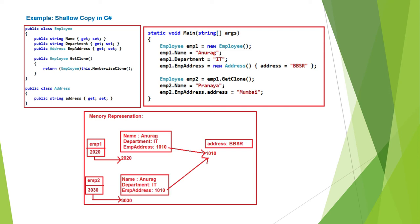When the first four statements are executed, two objects are created in the heap memory: one for Employee and another for Address. Name and Department are value types, so they directly store values like 'Anurag' and 'IT'. EmployeeAddress is a reference type, so instead of storing the value directly, it stores the base address of the Address object — for example, 1010. Employee1 is a reference variable in stack memory holding the base address of the Employee object, such as 2020.